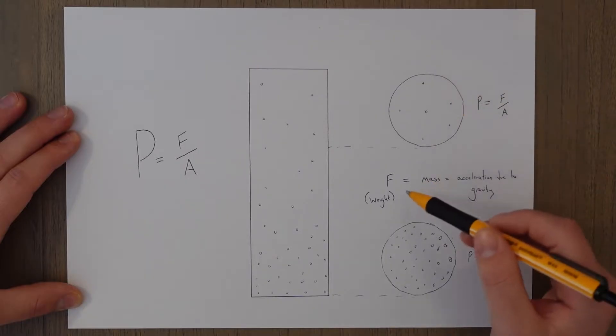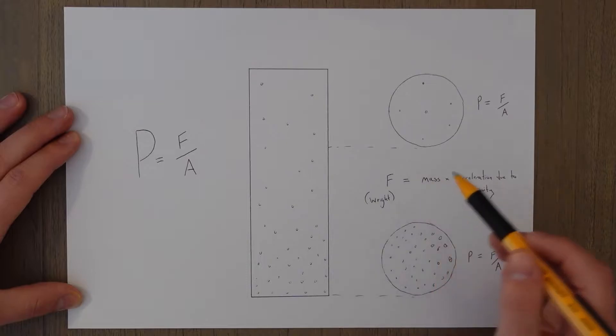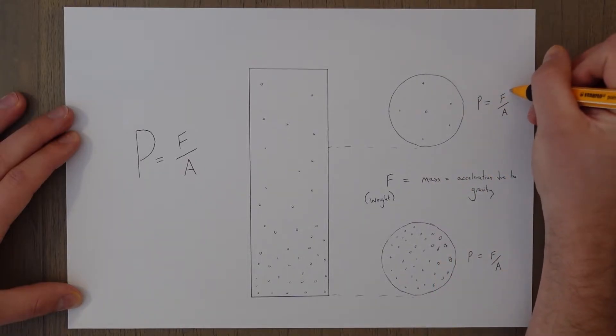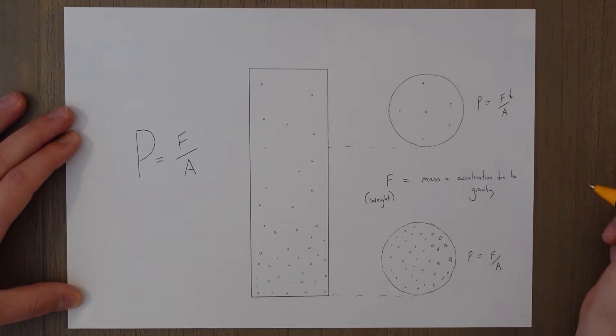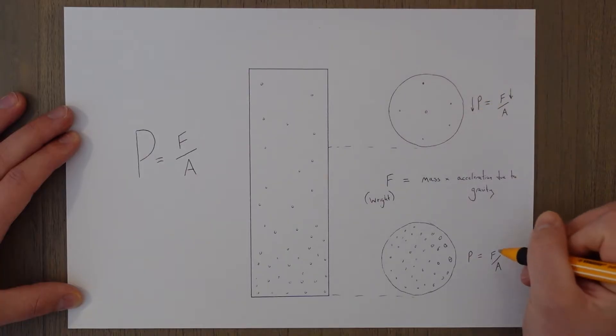This means that the force element, the weight element of our pressure equation reduces as we get higher up, and that in turn makes the pressure reduce. Down near the bottom there's more weight so that's more force and that means there's more pressure.